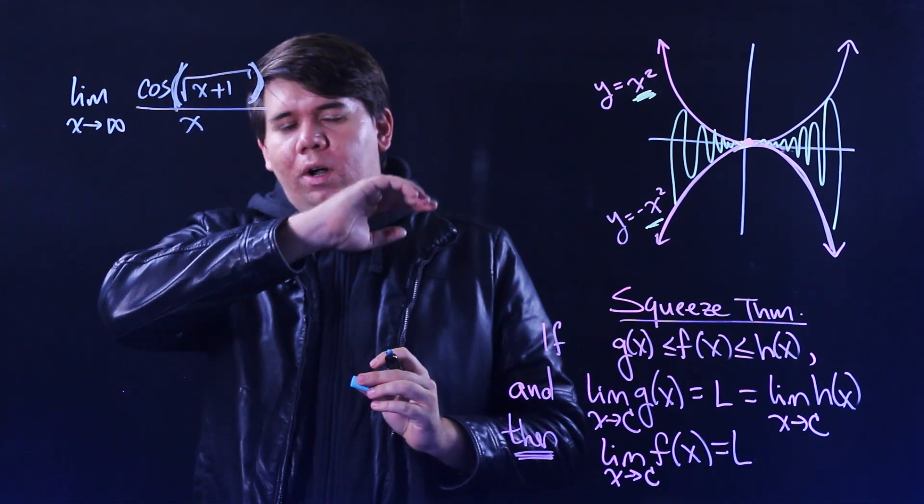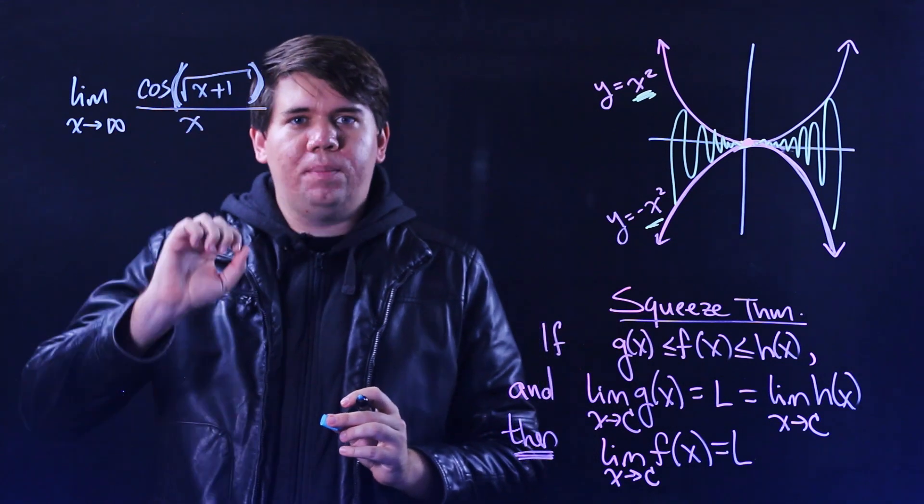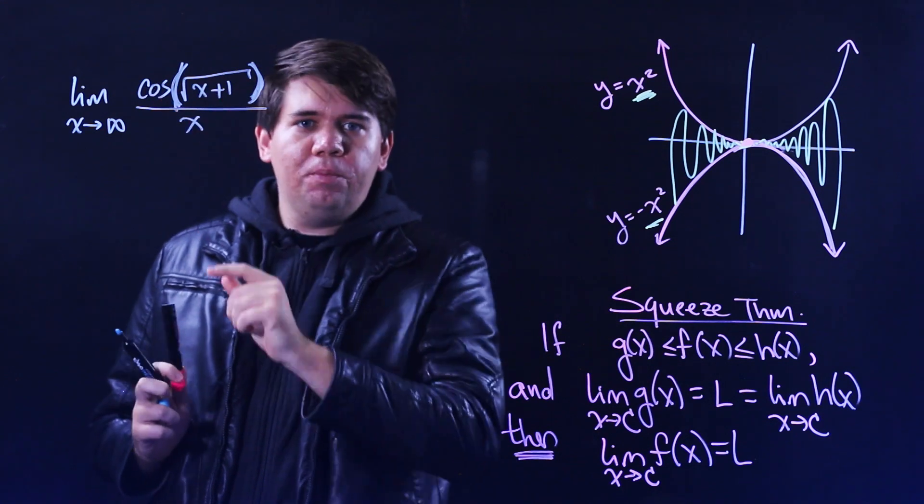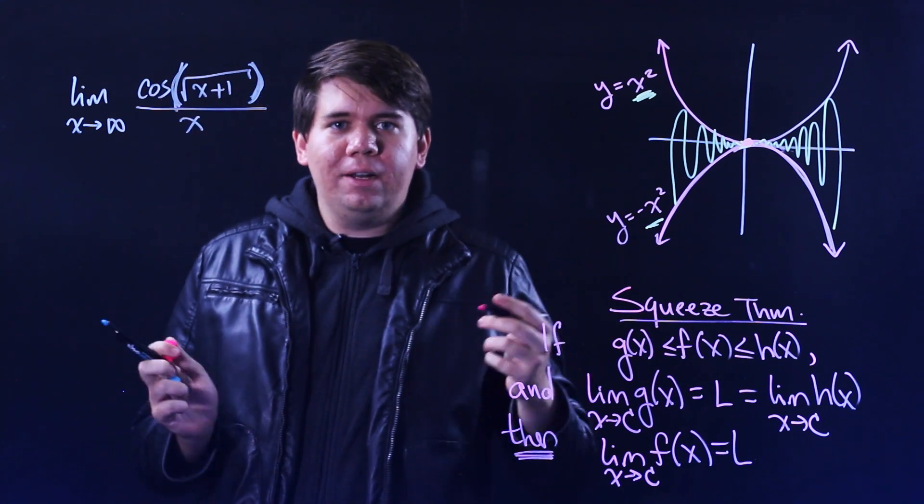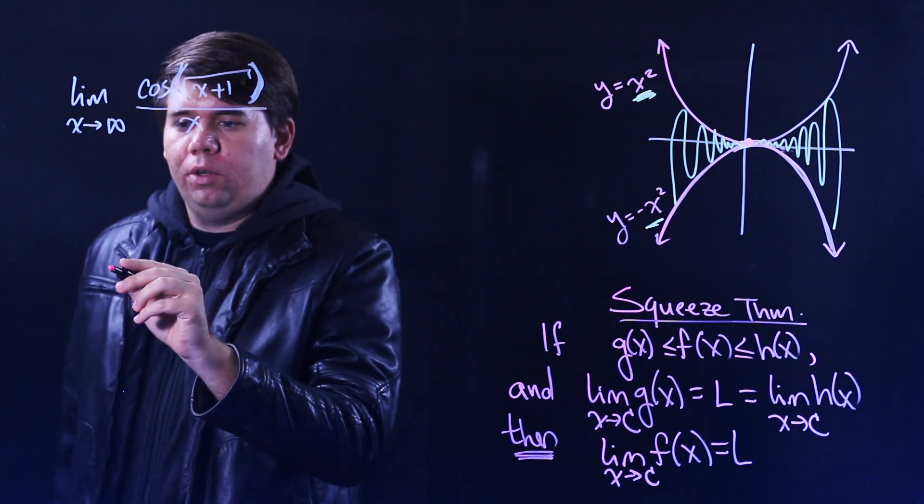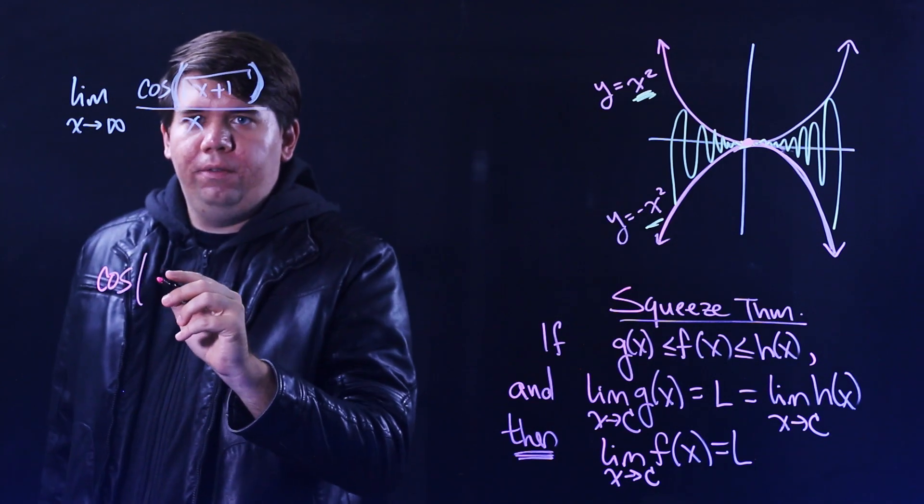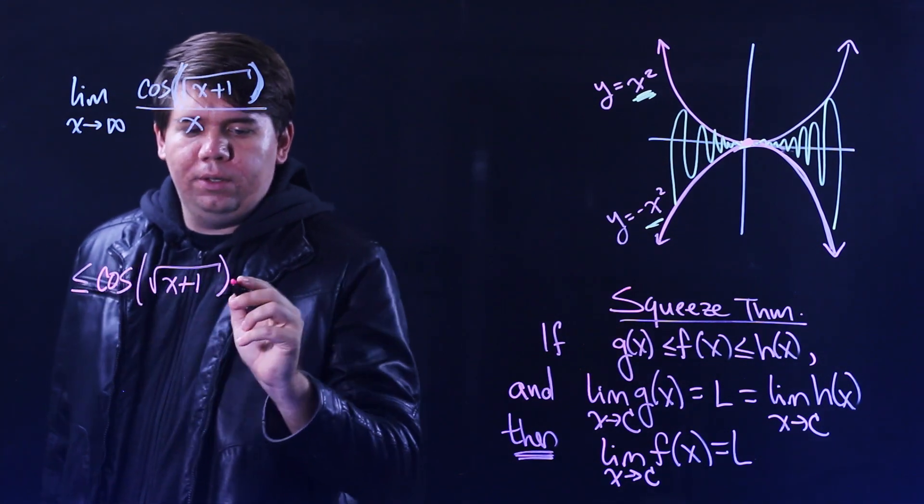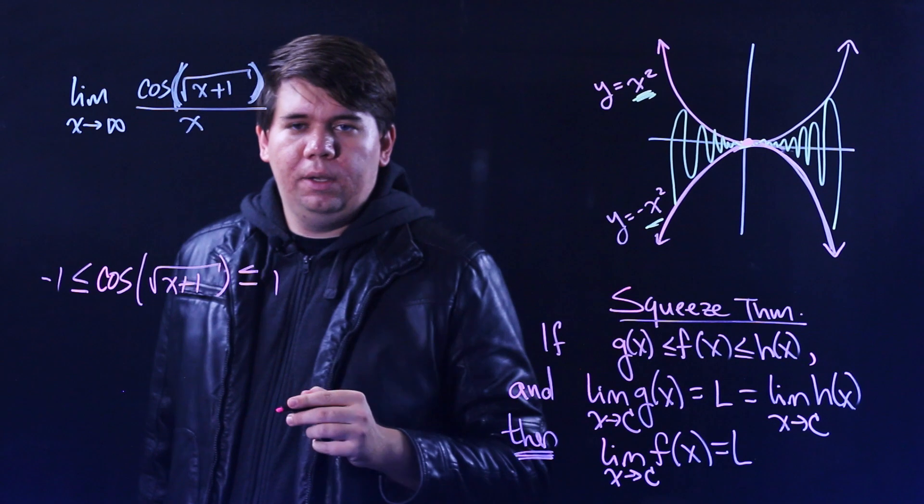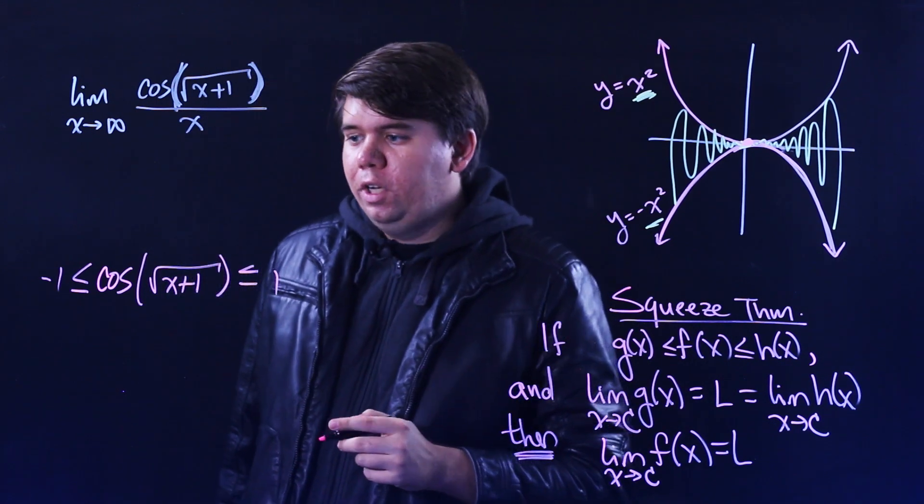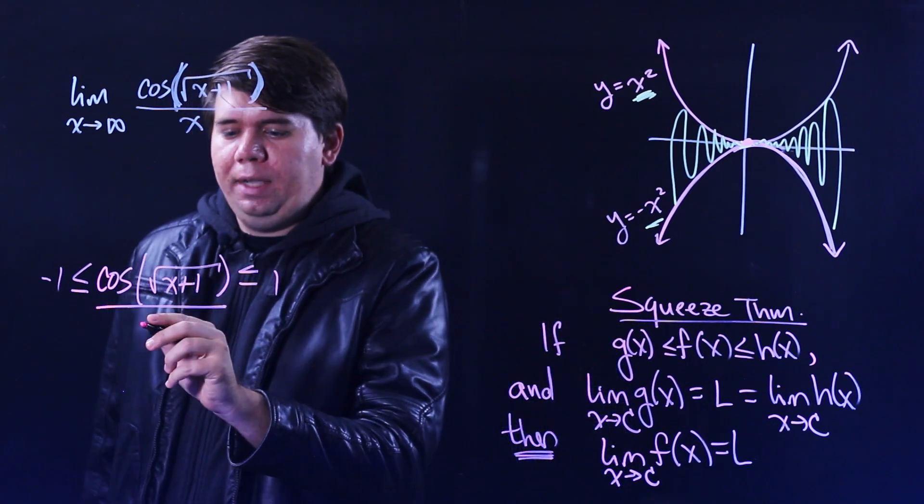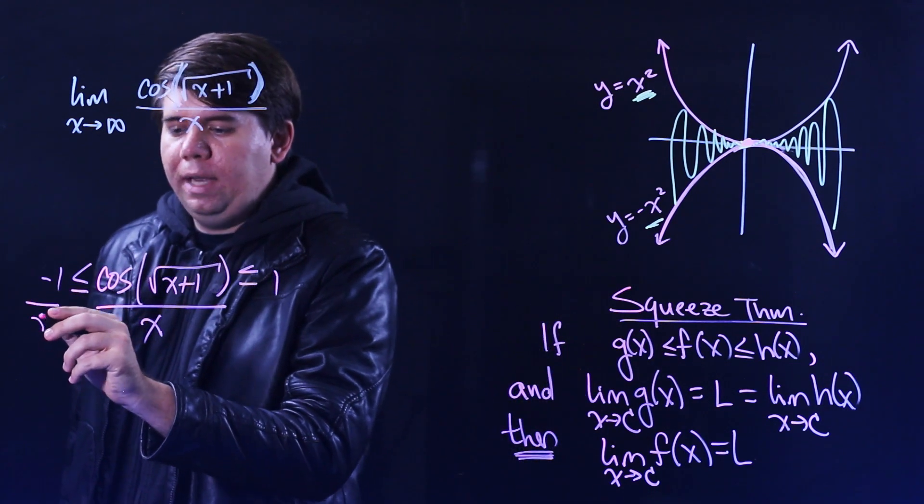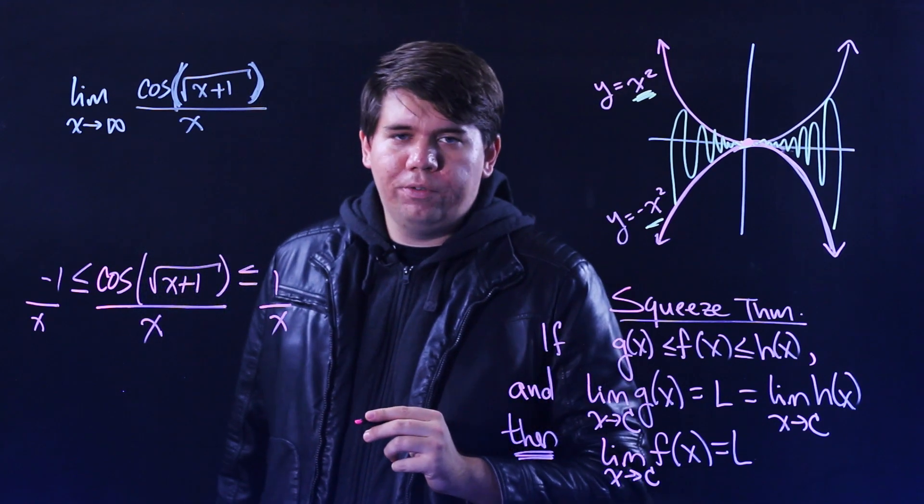Here, x is going off to infinity. What will this limit be equal to? Well, reason just like before. We know that cosine of whatever you put into it is going to spit out values between minus 1 and 1. So, cosine of the square root of x plus 1 must be spitting out values that are between minus 1 and 1. Therefore, cosine divided by x must be spitting out values that are somewhere in between minus 1 over x and 1 over x.